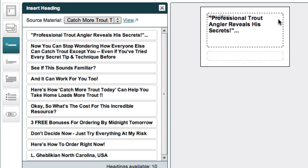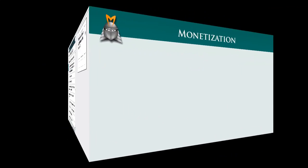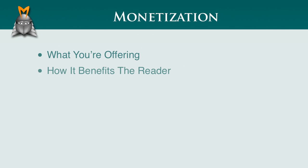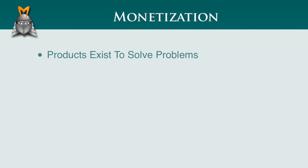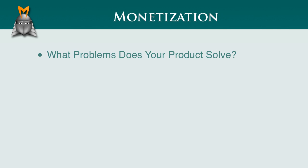Next we want to write our ad copy, the main body of our ad. Because we're writing a sidebar widget ad, we only have a limited amount of space, so the main body should only be a few short sentences long. There are two things we want to achieve: we want to tell the reader what it is that we're offering them and how it benefits them — what the product is and the benefits it provides, or the problems it solves. Every product is designed to solve a problem; it's the core reason the product exists and the major reason why people buy it. So before we begin, we need to think about what problems the product solves.